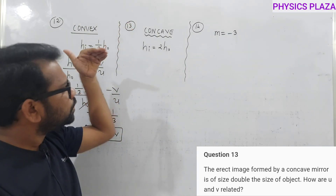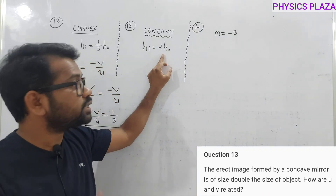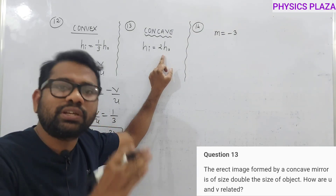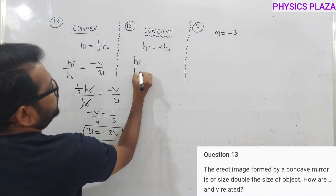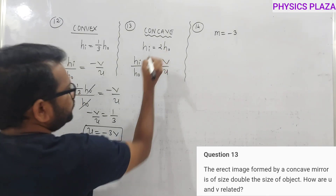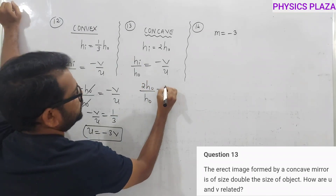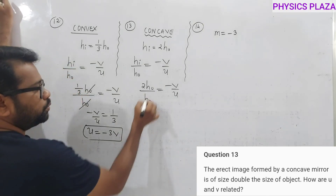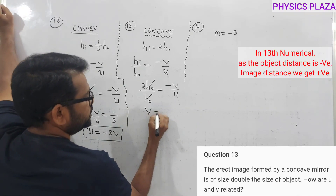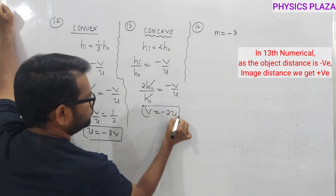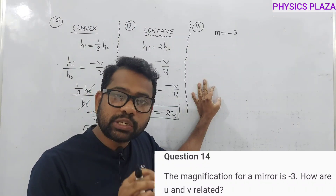Thirteenth numerical: a concave mirror forms a virtual image twice the size of the object. Find the relation between image distance and object distance. Using image height/object height = −v/u: 2h₀/h₀ = −v/u, so 2 = −v/u. Therefore v = −2u.